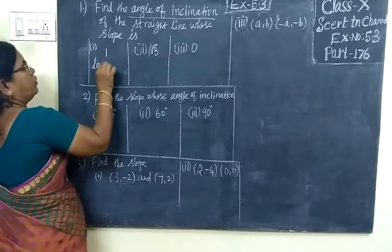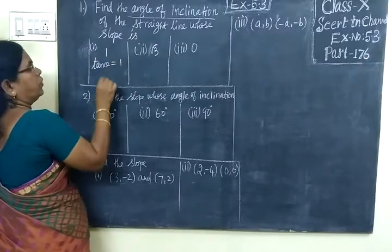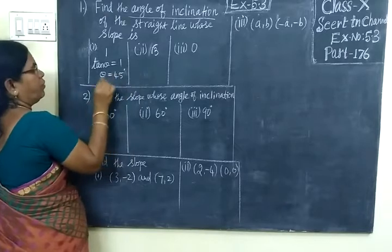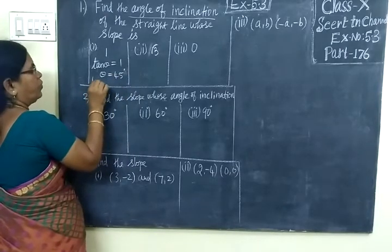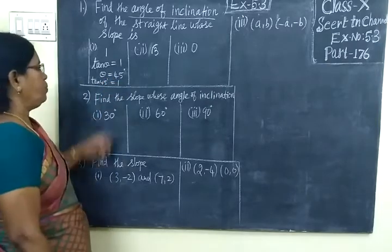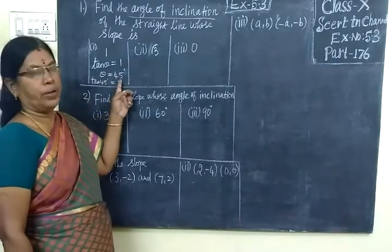So here, tan θ equals 1. Now, θ equals 45 degrees, because tan 45 is 1. We know tan 45° equals 1, which implies θ equals 45 degrees.